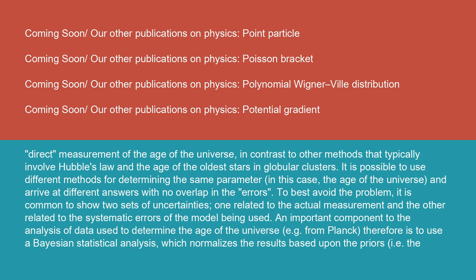To best avoid the problem, it is common to show two sets of uncertainties: one related to the actual measurement and the other related to the systematic errors of the model being used.